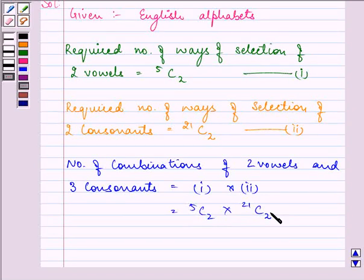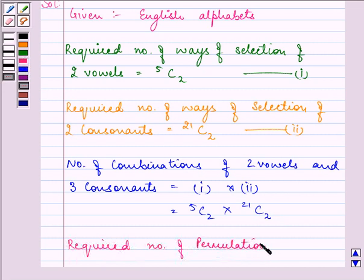These 4 letters can also be arranged among themselves in a number of ways. So the required number of permutation is 4P4, that is equal to 4 factorial.